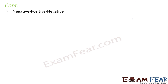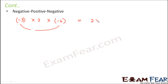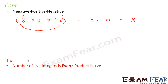Now let's look at the third scenario: a negative integer, a positive, and a negative integer — for example, minus three multiplied by two multiplied by minus six. We first multiply the two negatives: minus three times minus six is eighteen, and two negative signs give a positive. Then two times eighteen equals thirty-six. Applying our tip: we have two negative integers, which is even, so the result is positive. When the number of negatives is even the product is positive; when odd, the product is negative.